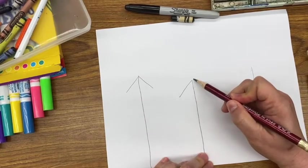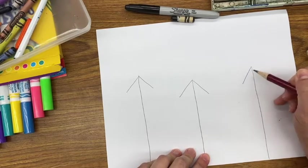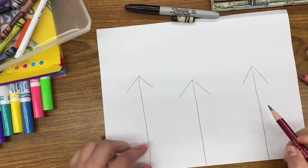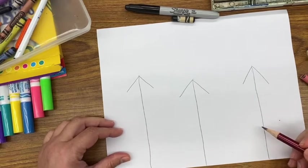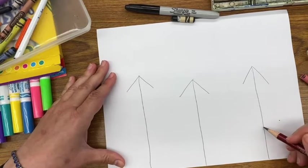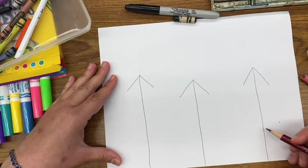The next thing that you're going to do, so we can give this a little bit more perspective, is you're going to draw three more lines. I'm going to draw three lines below my first three lines.